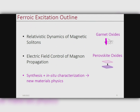Here's the outline for the talk today. I'll spend most of my time talking about a garnet oxide system — a very historic system — and I'll show you how by engineering these materials correctly you can actually excite dynamics so fast you hit new physics, so we'll look at relativistic dynamics. Then at the last part of the talk, I'll show you some very recent work on our ability to actually control magnon propagation with electric fields in correlated perovskite oxides. The underlying theme will be highlighted throughout.